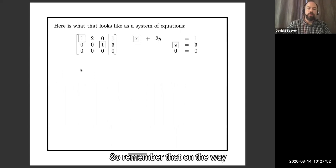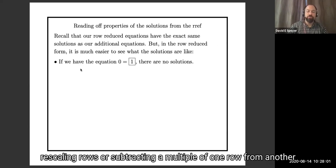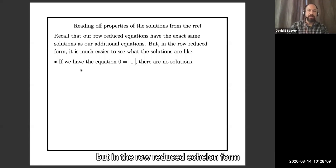So remember that on the way to our row reduced echelon form, we did various operations like rescaling rows, or subtracting a multiple of one row from another, and those operations did not change the set of solutions at all. But in the row reduced echelon form, it's going to be much easier to understand what the solutions are like.